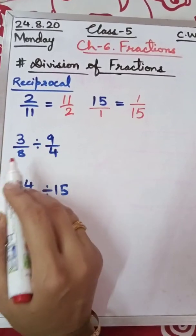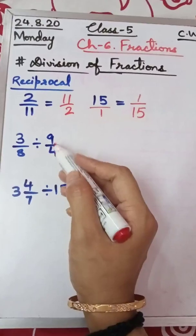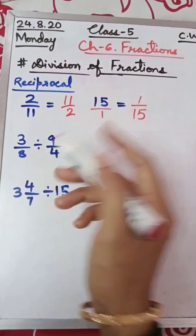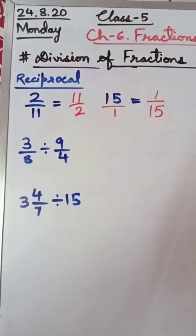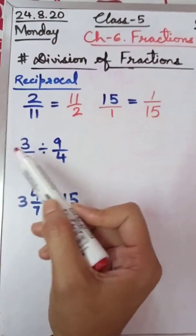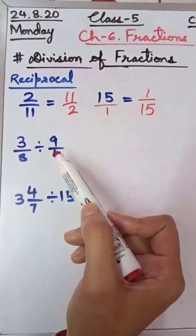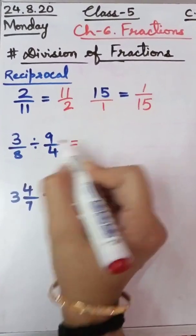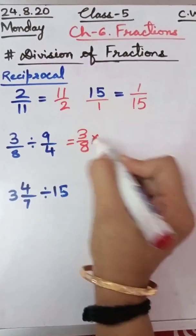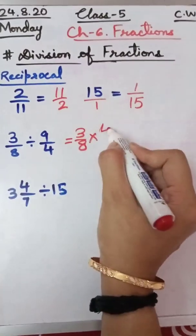Now moving to how to divide fractions. What we will do: we will just keep the first fraction as it is, reciprocal the second fraction, and also change the division sign to multiplication. In other words, while dividing fractions, we multiply the given fraction by the reciprocal of the second fraction. So 3 by 8 will be written as it is, the division sign will turn into multiplication, and we will write the reciprocal of 9 by 4, which is 4 by 9.